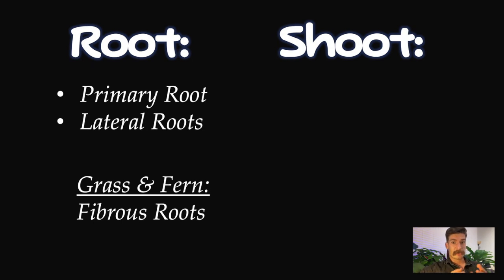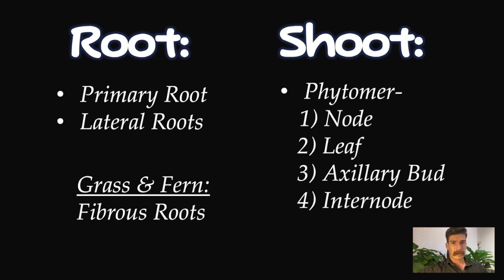If we have shoots, there's a thing called a phytomer. Shoots are made of phytomers. The phytomer is comprised of the node, the leaf, the axillary bud, and the internode. These are the main parts of the plant, and everything else is a variation on that theme. So we can learn these core components and basically understand all of plant morphology.